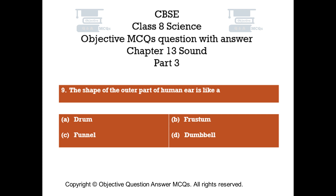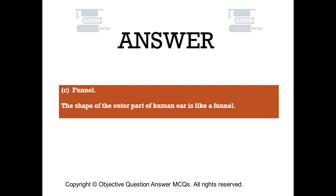Question number 9. The shape of the outer part of human ear is like: Option A – drum. Option B – frustum. Option C – funnel. Option D – dumbbell. The right answer is option C. The shape of the outer part of human ear is like a funnel.